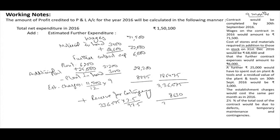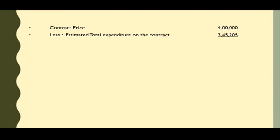Isko add karenge toh mere paas aa daega 3,45,205. Yeh mera paas kya aa gaya — total estimated cost: 3,45,205. Toh total estimated cost aa gaya mera paas. Ab mera paas contract price bhi given hai — 4,00,000. Less estimated total expenditure jo abhi tak contract ab kami nikaala — woh hai 3,45,205. Isme se minus kar denge isko, toh mera paas estimated total profit aa gaya: 54,795.